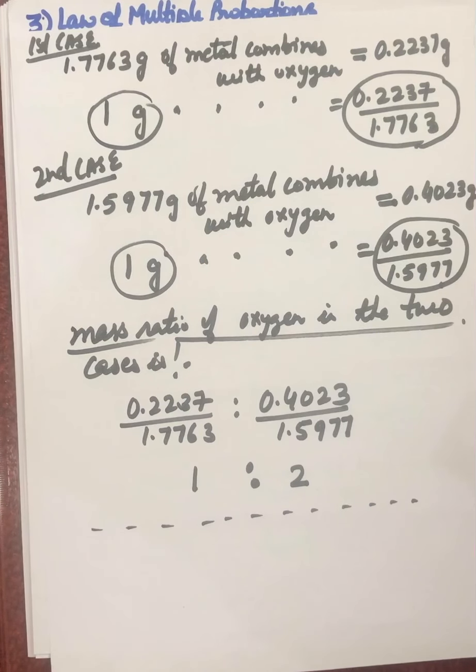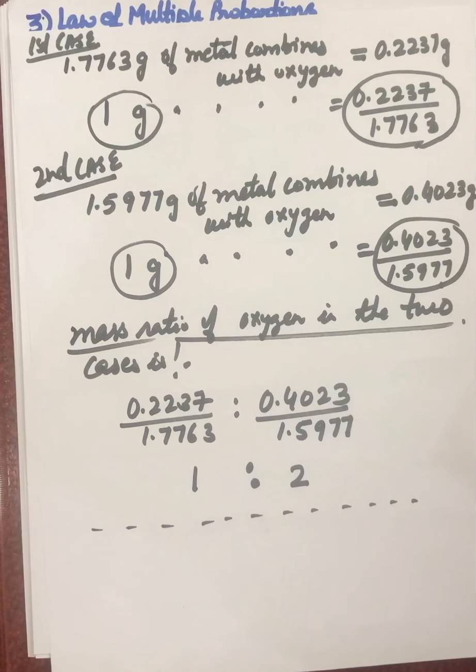So in the law of multiple proportion: first get the masses of the elements in the compound, fix the mass of one element, find the mass of the other in all cases, write in a ratio form — this ratio will be a simple multiple ratio. Three laws' numericals are covered today: law of conservation of mass, law of constant proportion, and law of multiple proportion.